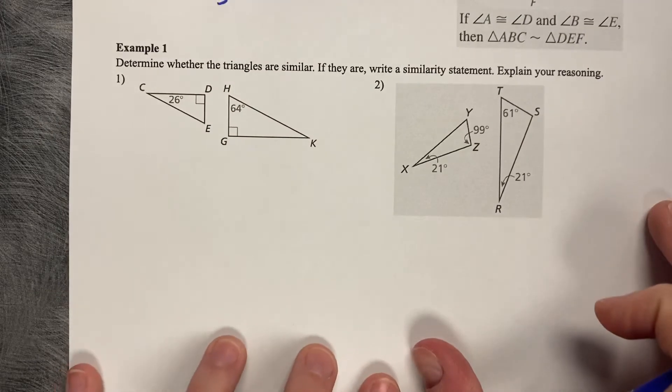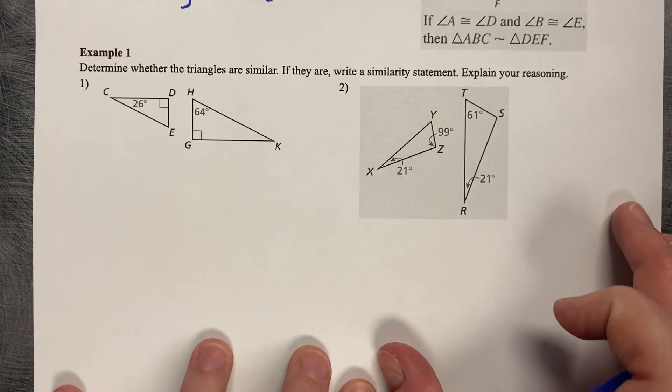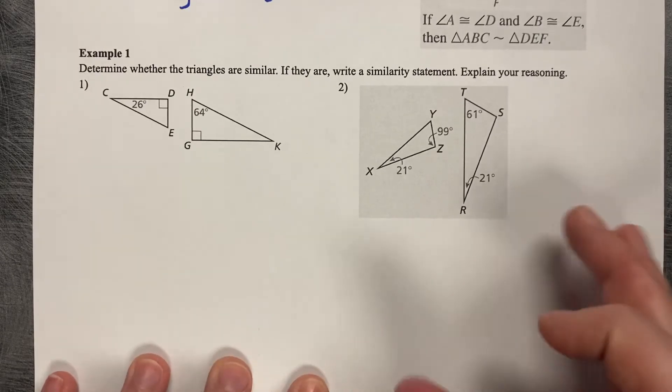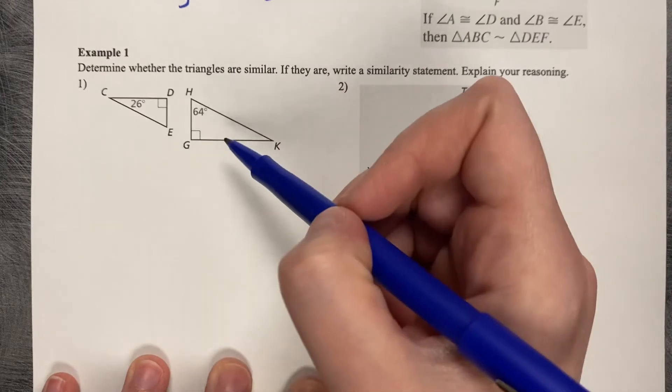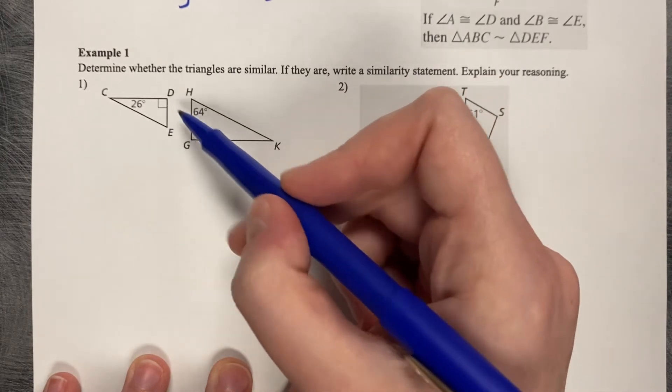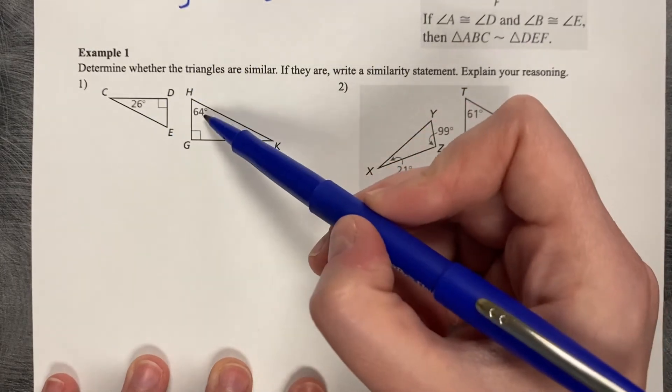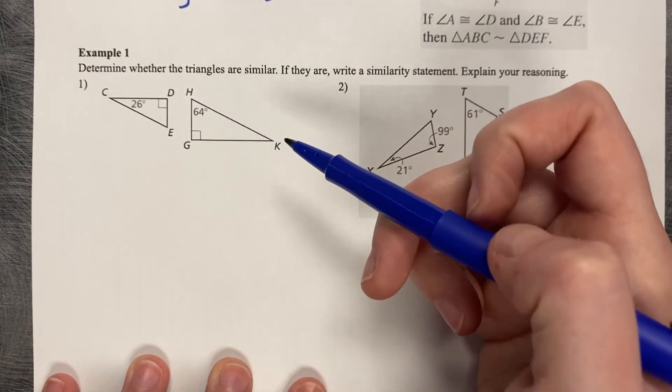So let's try it on these two problems. Determine whether the triangles are similar. If they are, write a similarity statement, explain your reasoning. So these look similar to each other. They're both right triangles, at least. I can see that. But they're giving me two different angles. They're giving me this acute angle, 26, and this slightly larger acute angle, 64. So the question is, what is angle E, and what is angle K?